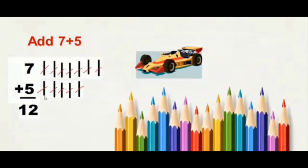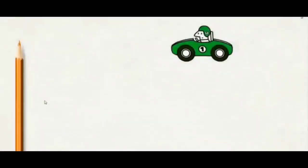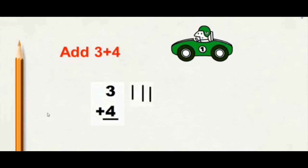Next, look at another example. 3 plus 4. We will write the numbers vertically as 3 plus 4, one below the other. 3 lines to show the number 3, 4 lines to show number 4.